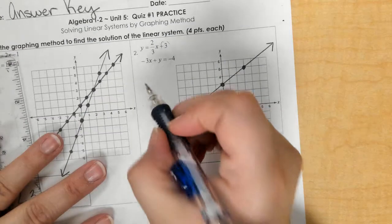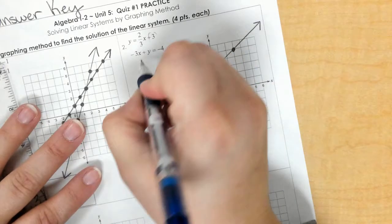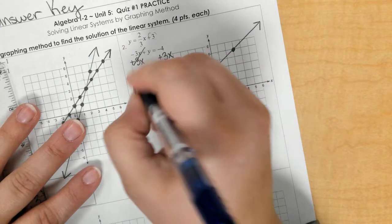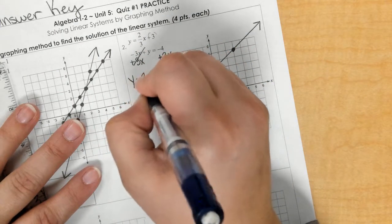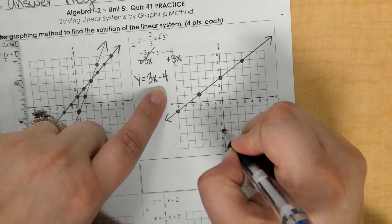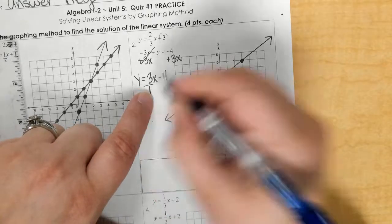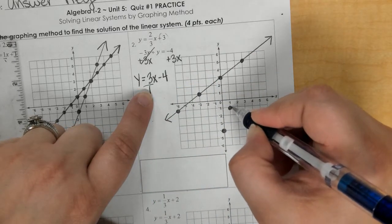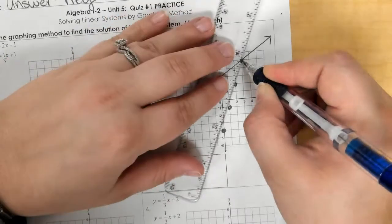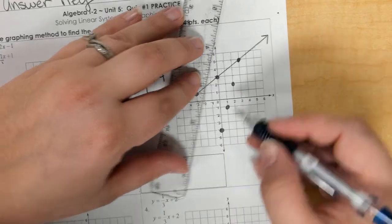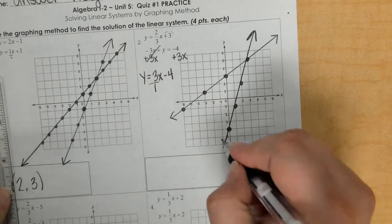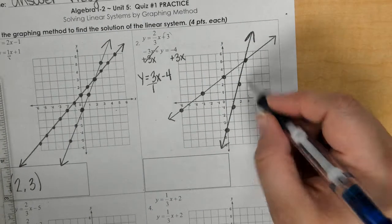The second equation, we have to put in slope-intercept form. We're going to move the x over by adding 3x to both sides. We get y equals 3x minus 4. So we're going to begin at negative 4 and rise 3, run 1. In this one, we can't go down because we'll be off the graph. Our point is 3, 5.